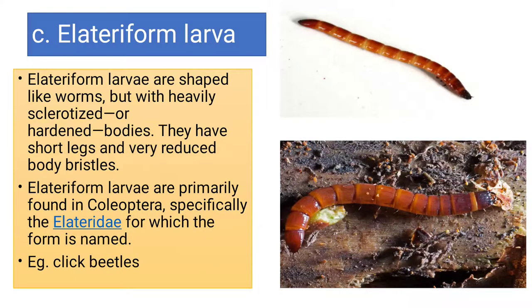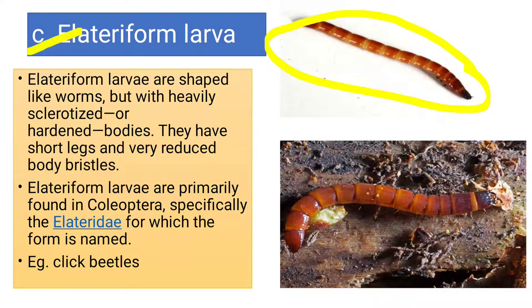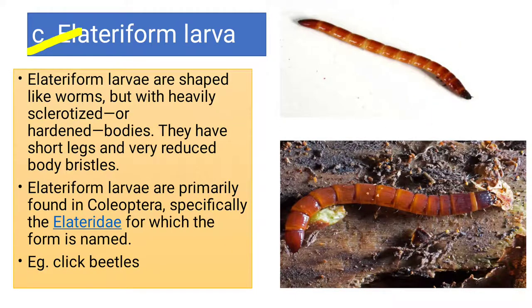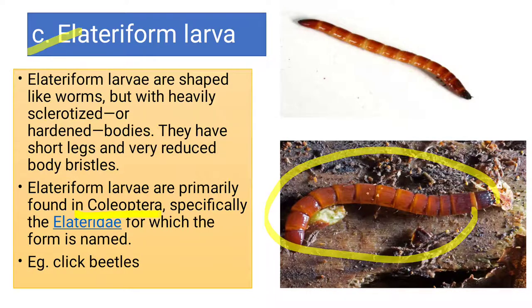The third category within oligopod is the elateriform larva. 'Elater' means elongated larva. As you can see from its shape, it is an elongated larva, resembling a worm, heavily sclerotized and hard-bodied. The legs are very small thoracic legs. Across the whole body there are reduced bristles — hair-type structures. These larvae are normally found in beetles of the Elateridae family. The larvae of click beetles are called elateriform larvae.